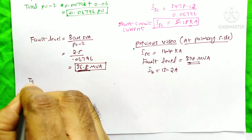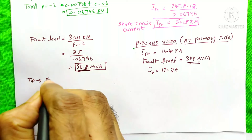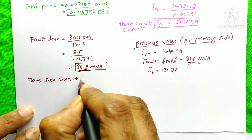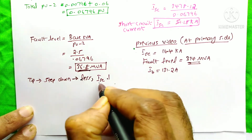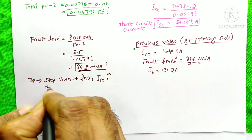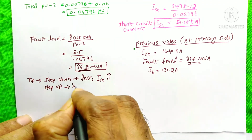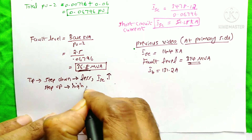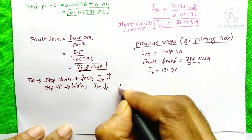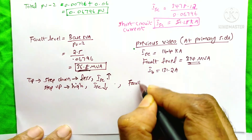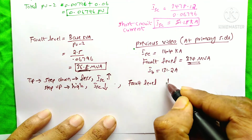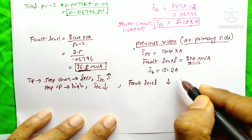Here is a tip: whenever our transformer is a step-down transformer, the voltage at the secondary side is less. Due to that, the short circuit current ISC will always be more. And for a step-up transformer, the voltage is high on the secondary side, so the short circuit current ISC is less. But when talking about fault level at the transformer, for any transformer, the fault level at the secondary side will decrease due to the increase of per unit impedance.